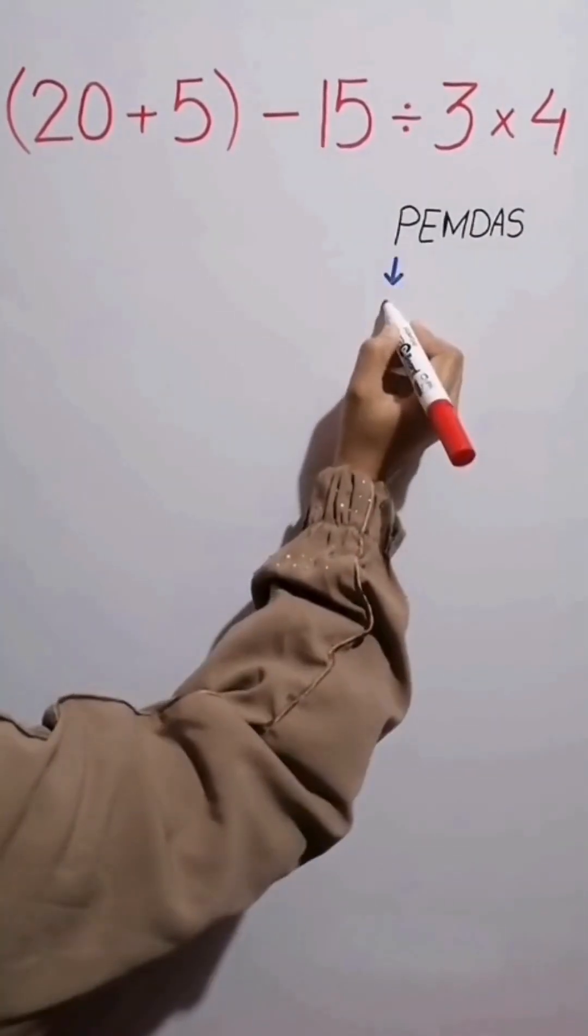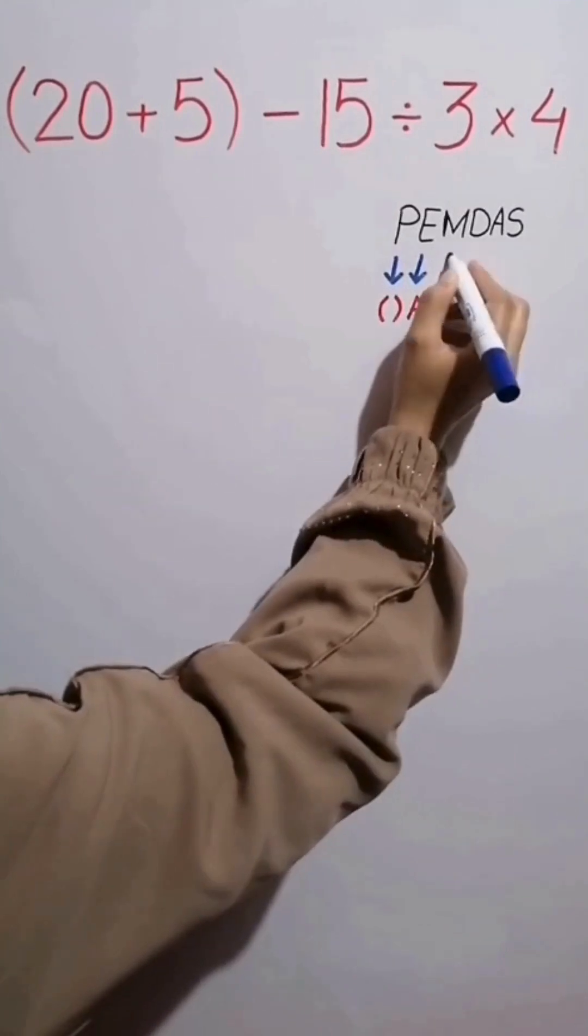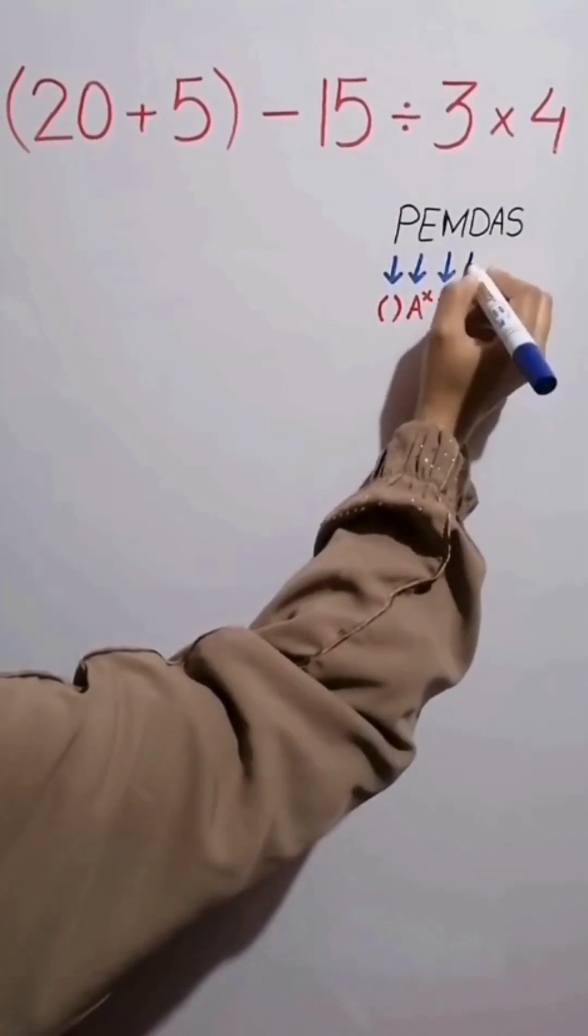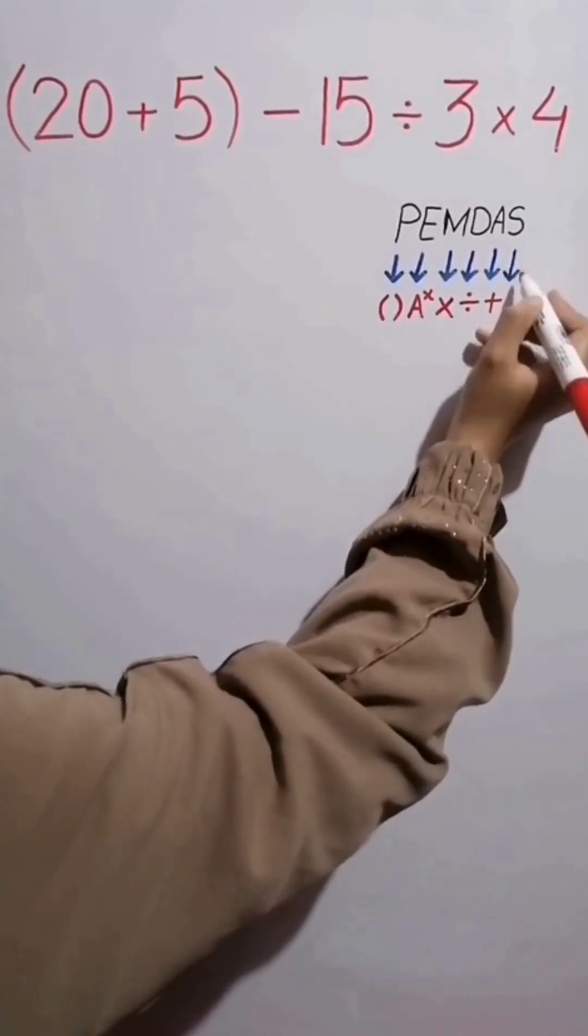In this rule, P stands for parentheses, E stands for exponent, M stands for multiplication, D stands for division, A stands for addition, and S stands for subtraction.